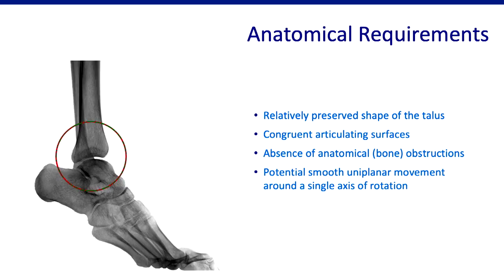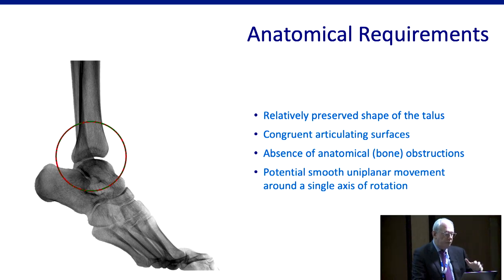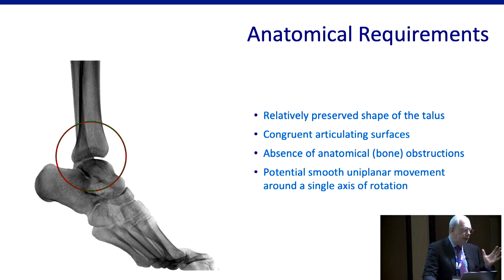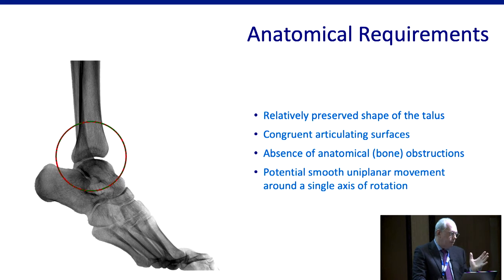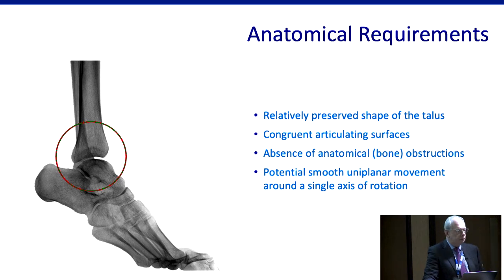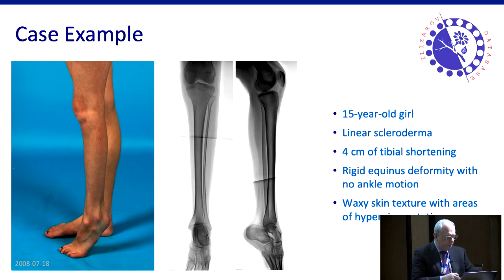Don't forget about anatomical requirements, because they are still important. We need a relatively preserved shape of the talus, congruent articulating surfaces, absence of any anatomical bone obstructions, and potentially smooth uniplanar movement around a single axis of rotation. It's very difficult to do this scientifically — it's more like feelings you get through experience. You look at the X-ray, touch the foot and say, yeah, that will likely go smoothly. And some you look at and say, no, there's no way to use constrained hinges here because this foot will not rotate.